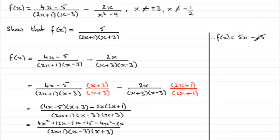And then you're left with minus 15 as well. So 5x minus 15 on the top all over the factors 2x plus 1 multiplied by x minus 3, x plus 3.